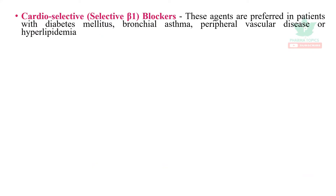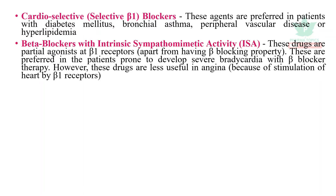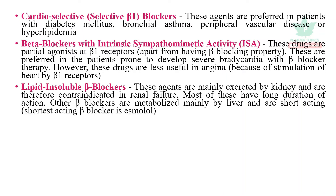Advanced beta blockers — cardioselective beta blockers are preferred in patients with diabetes mellitus, bronchial asthma, peripheral vascular disease, or dyslipidemia. Beta blockers with intrinsic sympathomimetic activity have partial agonist activity and are preferred in patients prone to develop bradycardia with beta blocker therapy, but they are not useful in angina because they stimulate the heart via beta-1 receptor stimulation.